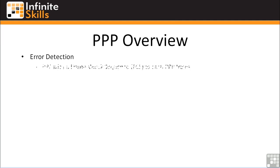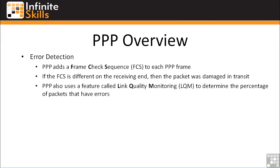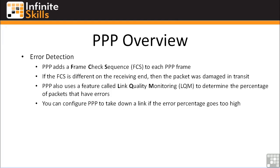Now let's talk about error detection. PPP adds a Frame Check Sequence, or FCS, to each PPP frame sent across the link — similar to an FCS on an Ethernet frame. If the FCS calculated on the receiving end differs from the one included in the frame, you know the packet was damaged in transit. PPP also uses a feature called LQM to determine the percentage of packets that have errors. It looks at how many packets were received versus how many were error-free, calculates a percentage, and you can configure PPP to take down a link if the error percentage goes too high.